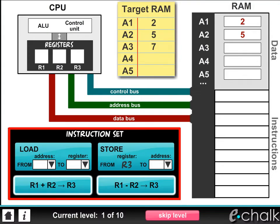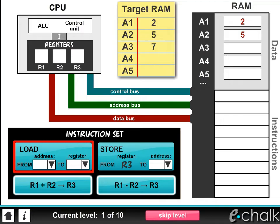Remember, a program is nothing more than a list of instructions for the computer to carry out. Since the ALU can only operate on data which is in its registers, the first instruction we need to use is the load command, which loads data from RAM into a register.